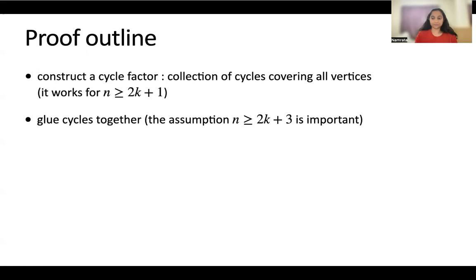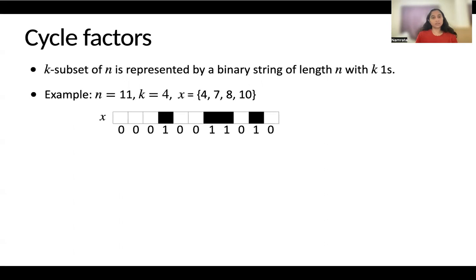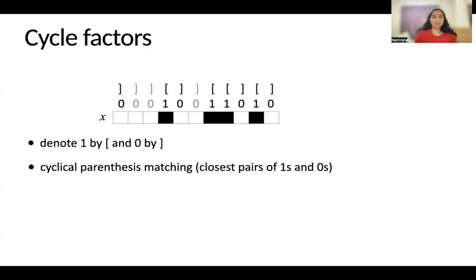Now let me give the construction of the cycle factor. We use a different representation of the vertices of Kneser graphs: a k-subset of {1,...,n} is represented by a binary string of length n with exactly k ones. For example, when n equals 11 and k equals 4, the set {4,7,8,10} is represented by a binary string of length 11 with ones at positions 4, 7, 8, and 10. In the picture, ones are filled boxes and zeros are unfilled boxes. In the next step, we denote 1 by an open parenthesis and 0 by a closed parenthesis, and perform cyclic parenthesis matching — matching the closest pairs of 1s and 0s.